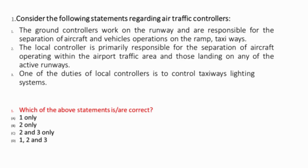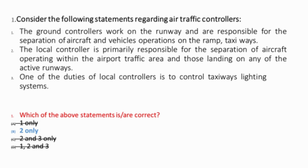Question 1: Consider the following statements regarding air traffic controllers. First statement: the ground controllers work on the runway and are responsible for separation of aircraft and vehicle operations on the ramp and taxiways — this is a false statement. Tower controller or local controller work on the runway. Second statement: the local controller is primarily responsible for separation of aircraft operating within the airport traffic area and those landing on any of the active runways — this is correct. Third statement: one of the duties of local controllers is to control taxiway lighting systems — false, this is the responsibility of the ground controller. This question is based on duties and responsibilities of air traffic control positions.